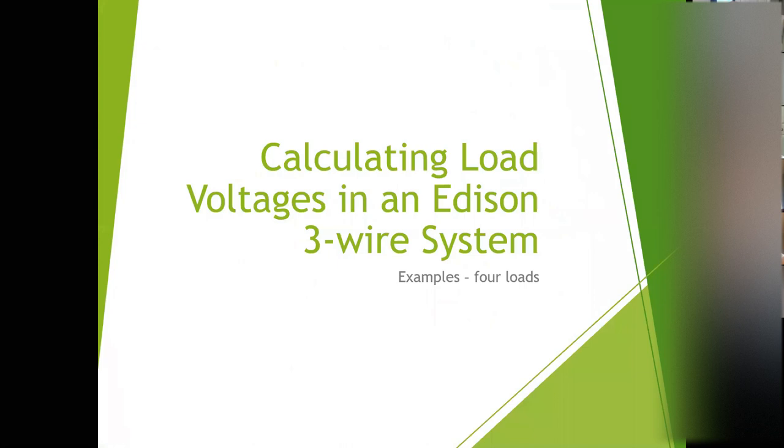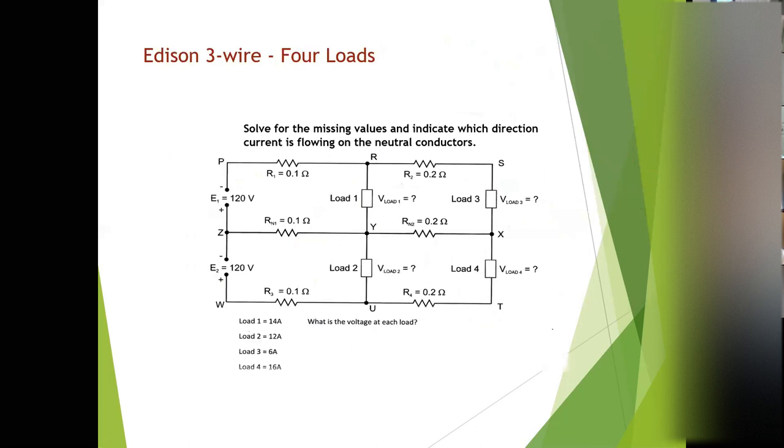So now what we're going to do is we're going to calculate load voltages in an Edison three wire system with four loads. Here is the example that we have. And I want you to solve for the missing values. We don't know the voltage across load one. In fact, we don't know the voltages across any of the loads, but they have given us the currents.